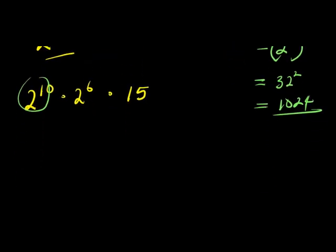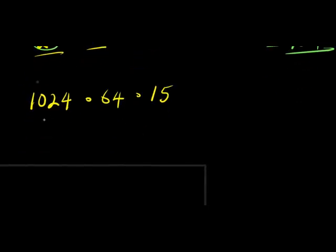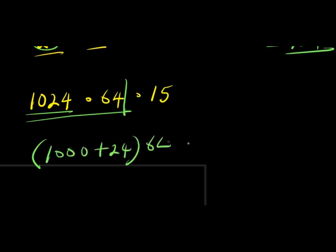So what I'm going to do will be to replace this with 1024 times, 2 power 6 is simply 32 times 2, that is 64, times 15. Let's start with multiplying this out first. I have 1024 times 64, let me express this as 1000 plus 24 times 64, then I have times 15.